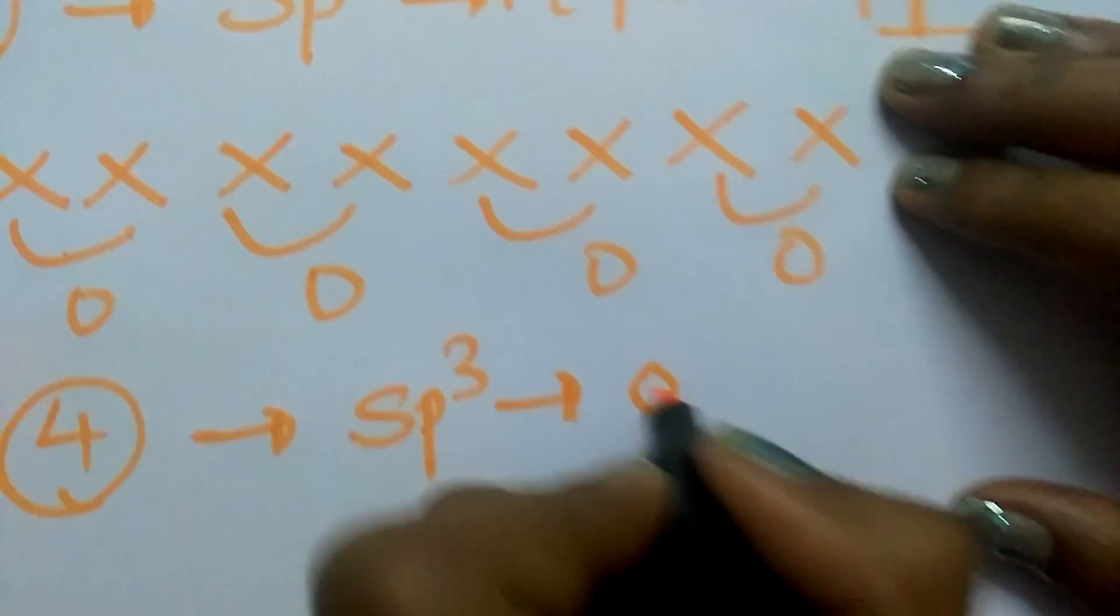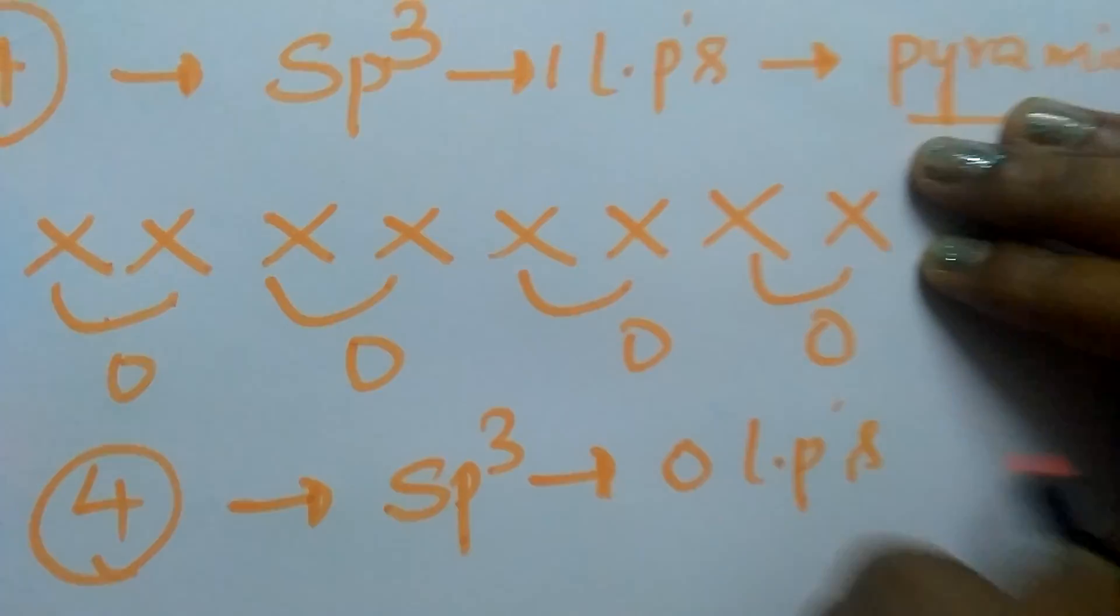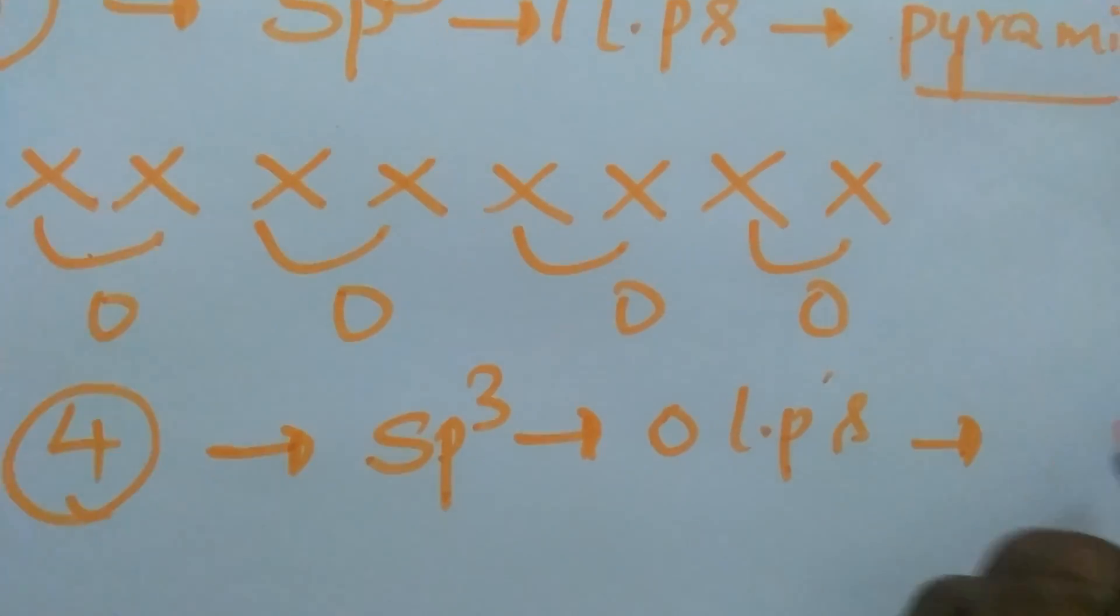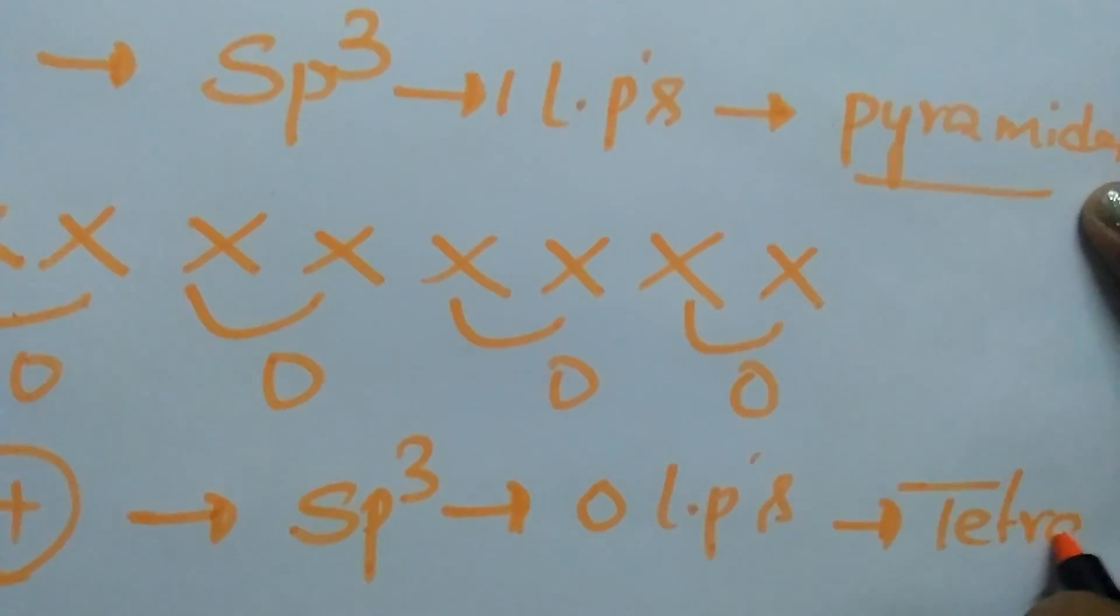And here no lone pairs, 0 lone pairs. So the shape of the molecule, according to VSEPR theory, is tetrahedral.